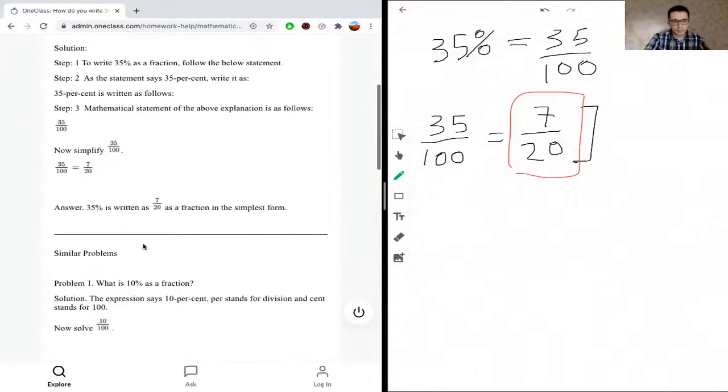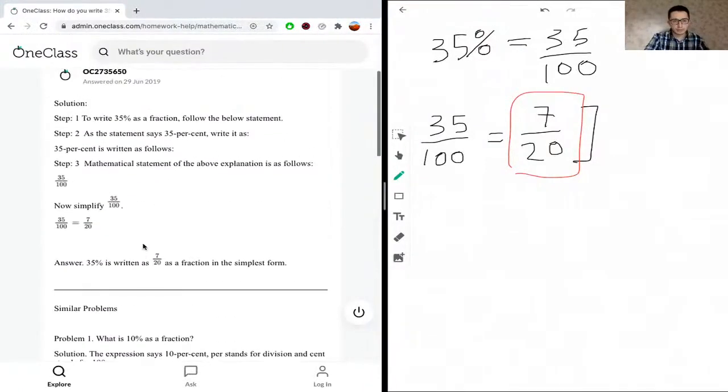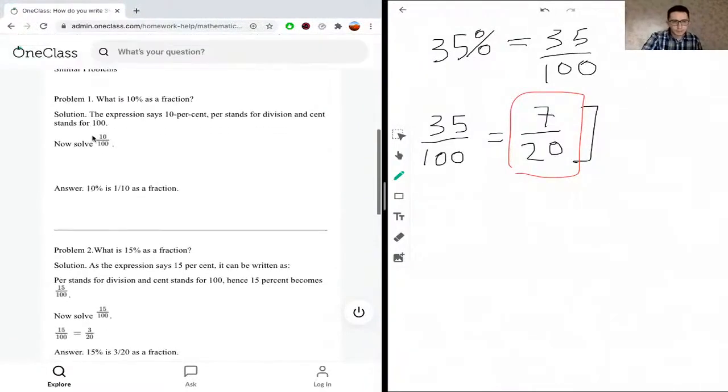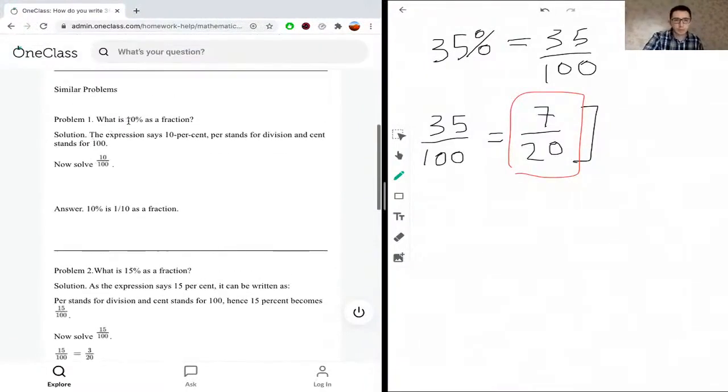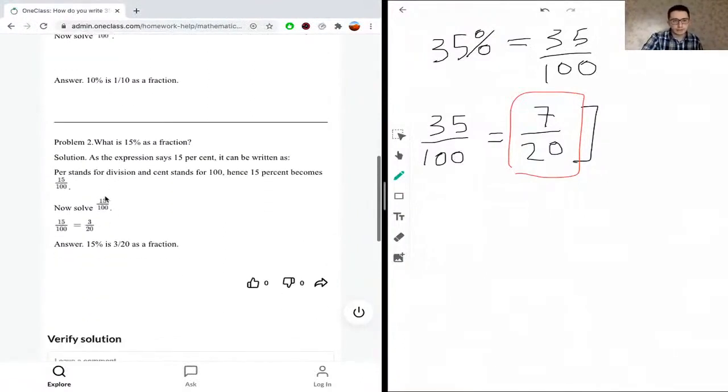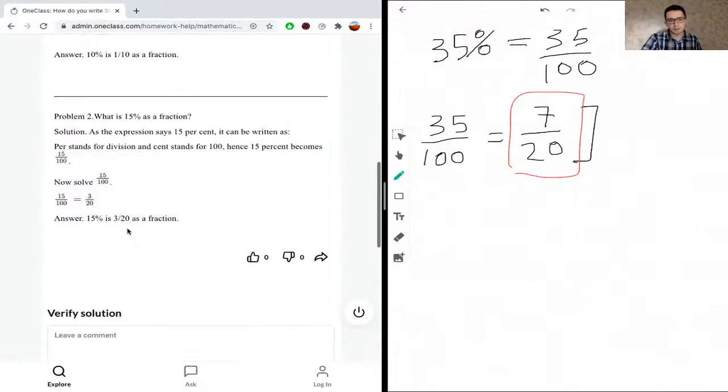Similar process followed: 35 over 100 for the percentage, then divided by 5 to get 7 over 20. Here they show another example: 10% becomes 10 over 100, divide both by 10 to get 1 over 10. Then 15% is 15 over 100, divide both by 5 to get 3 over 20 in simplest form.